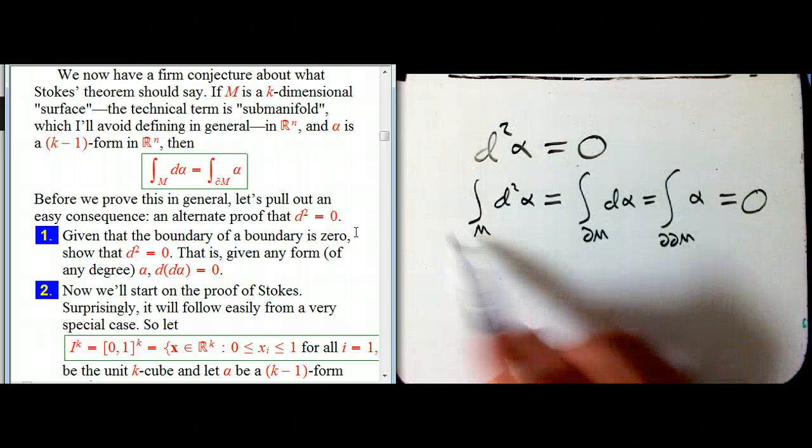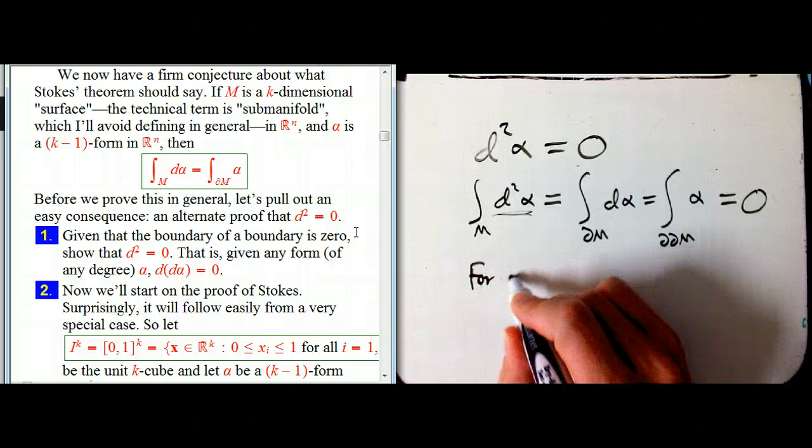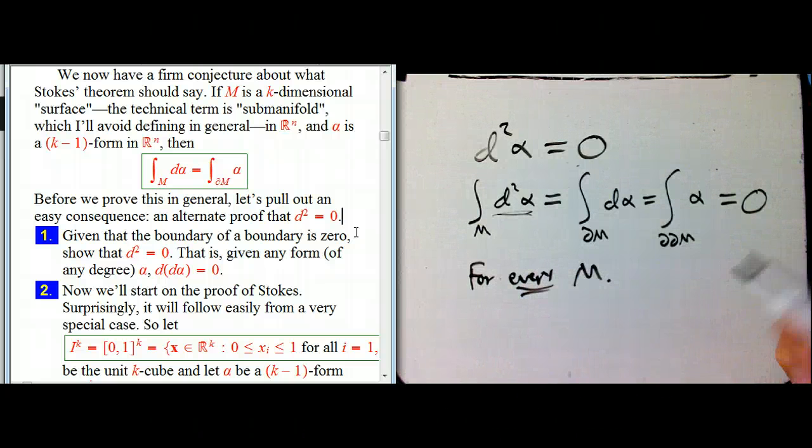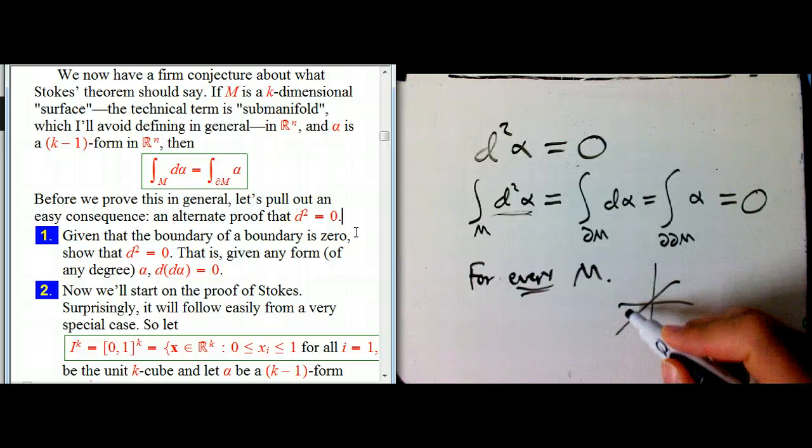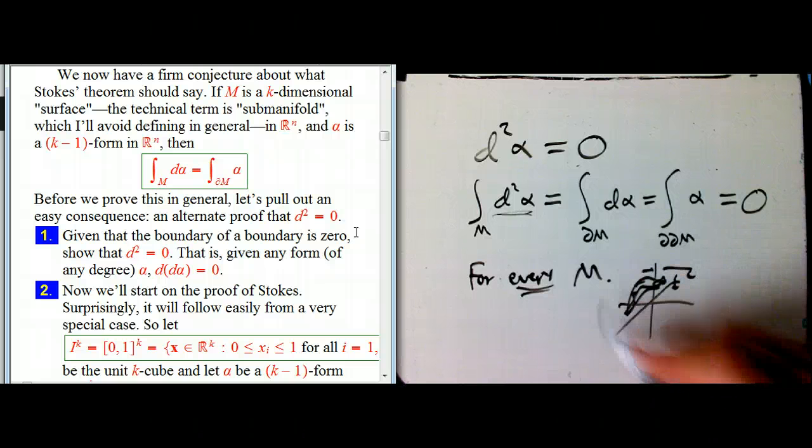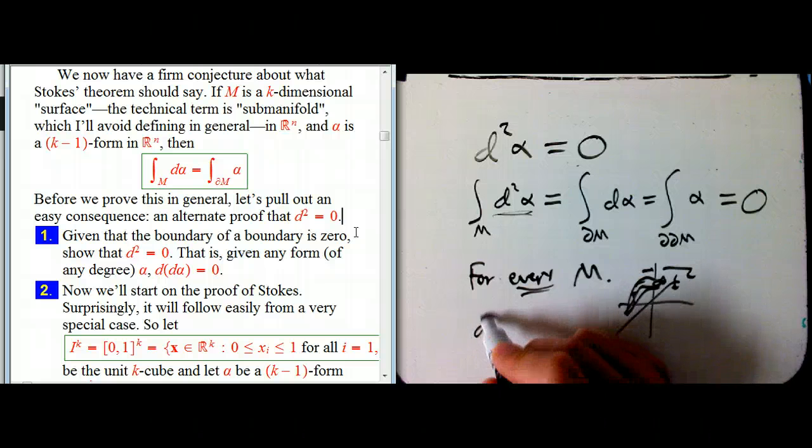So you might think that shows that this particular integral of this guy is zero. But this is true for every M. So let's think about that. For example, just in R^3 with a one form, the integral over every possible curve, you can imagine, short, big, whatever direction, is always zero.